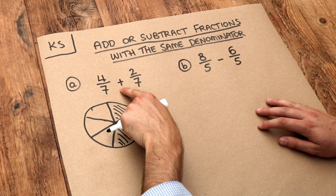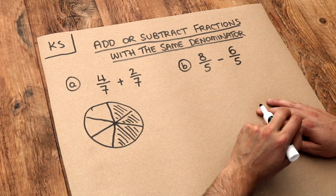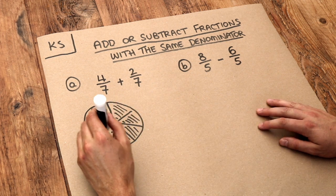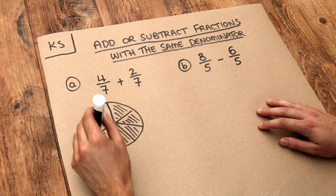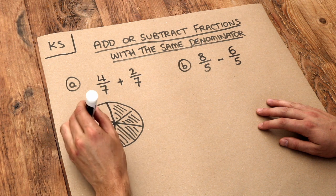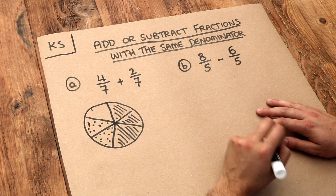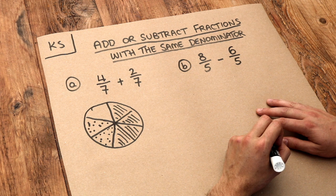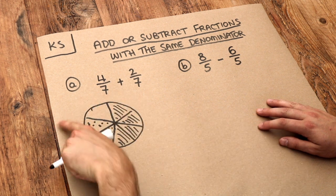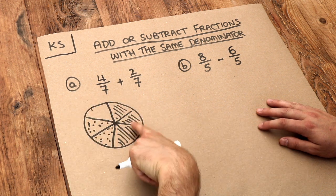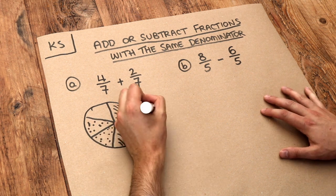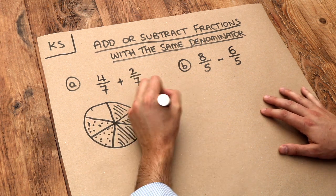Now we want to add two sevenths of a pizza. So we're going to take another seventh and a further seventh, because we're taking two sevenths of the pizza. Now in total, how much of the pizza do we have? Out of those seven pieces we have one, two, three, four, five, six — so we have six sevenths of that pizza.